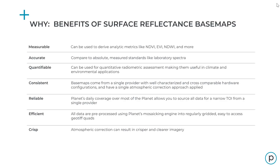Why use surface reflectance basemaps? Basemaps are measurable — they can be used to derive analytic metrics like NDVI, EVI, NDWI, and more. They're accurate — you can compare them to absolute measured standards like laboratory spectra. They're quantifiable — they can be used for quantitative radiometric assessment, making them useful in climate and environmental applications.